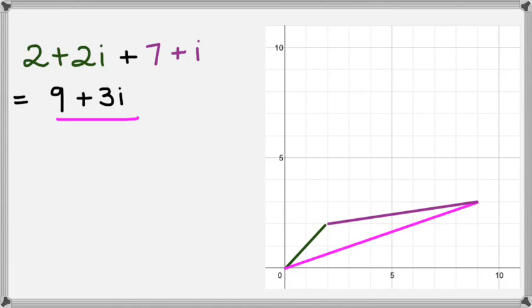When you add them together, you end up with the pink line, which is 9 plus 3i. So adding those two complex numbers, you get the final sum.